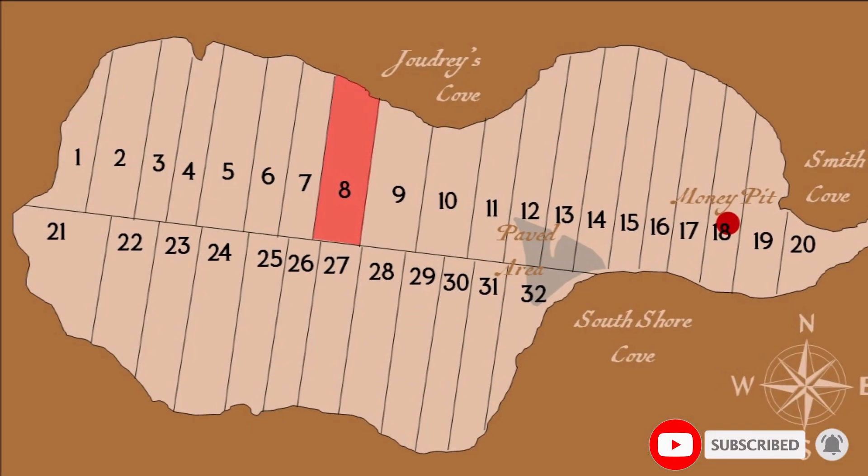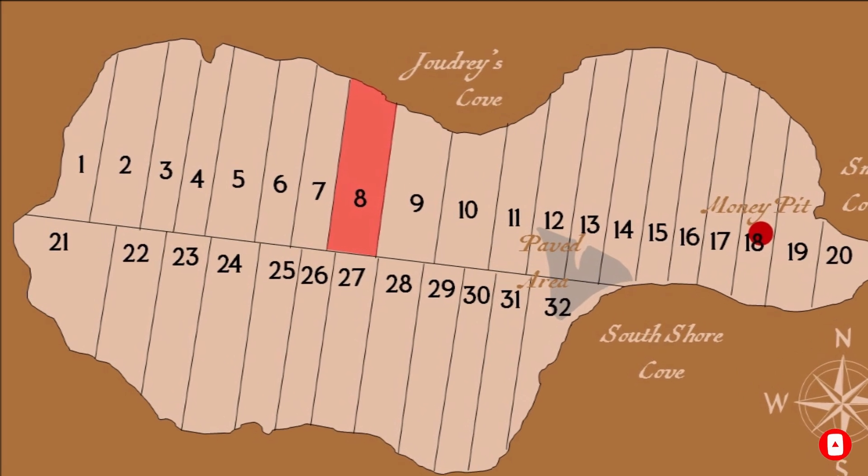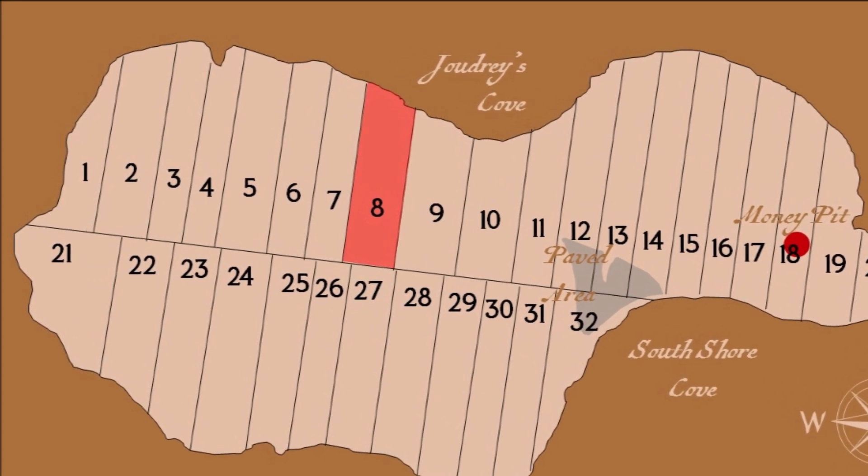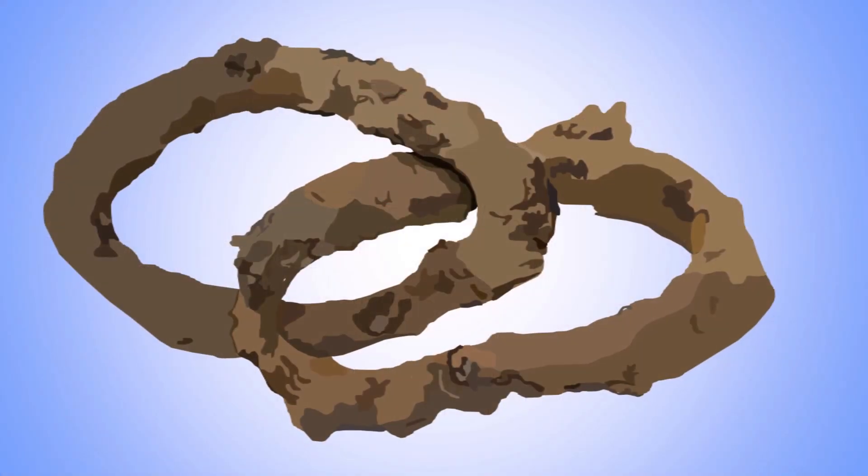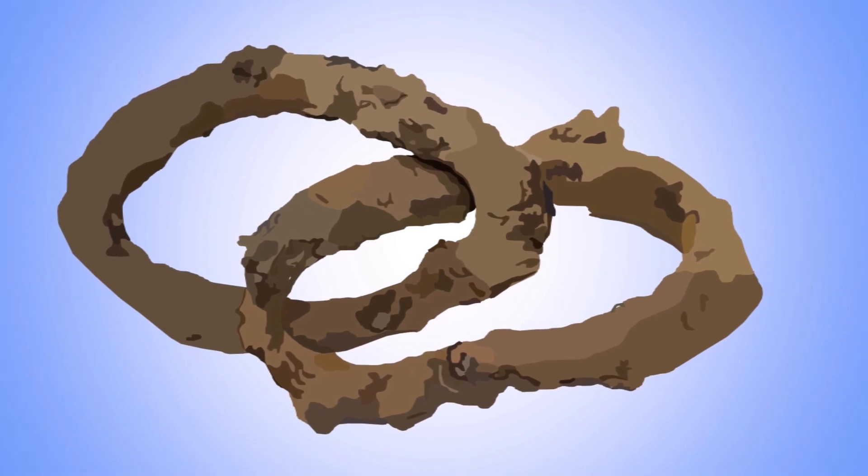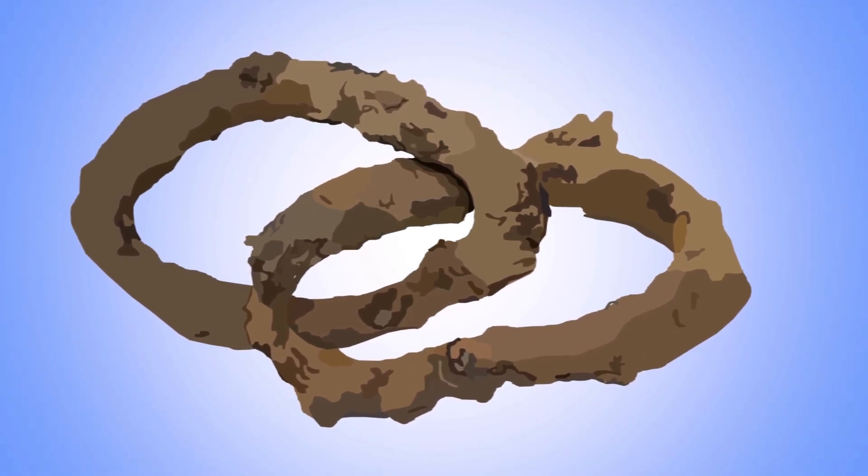In another scene, Gary Drayton and Jack Begley go metal detecting on Lot 8. First, they dig up two links of hand-forged iron chain, which Gary opines are probably old, on account of their oval shape.